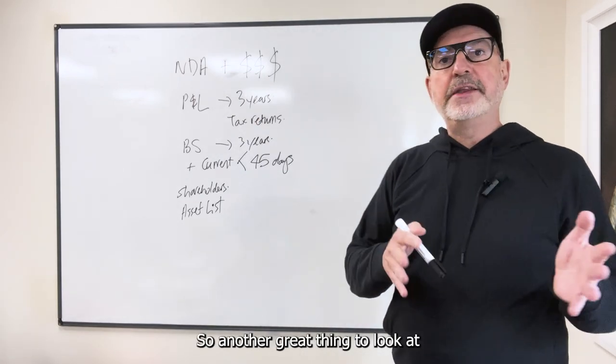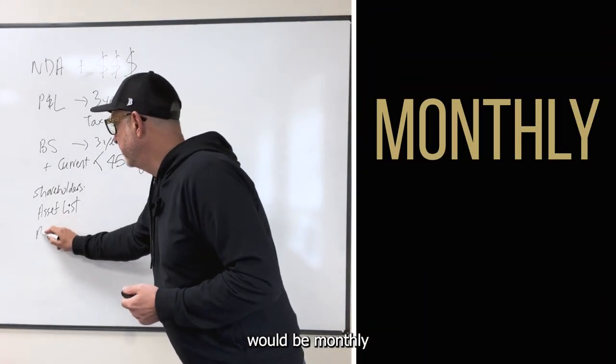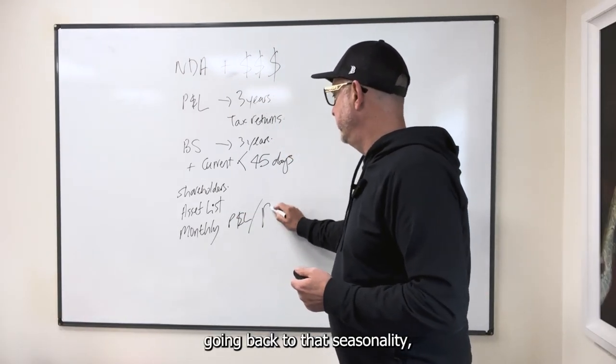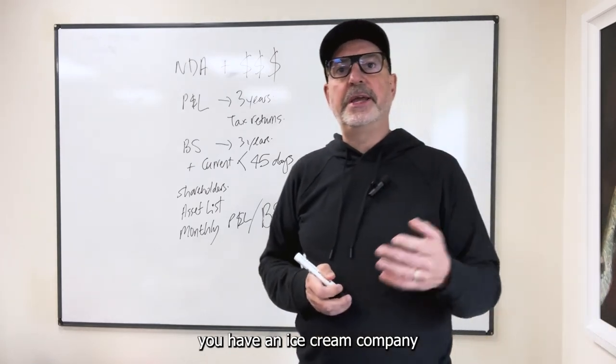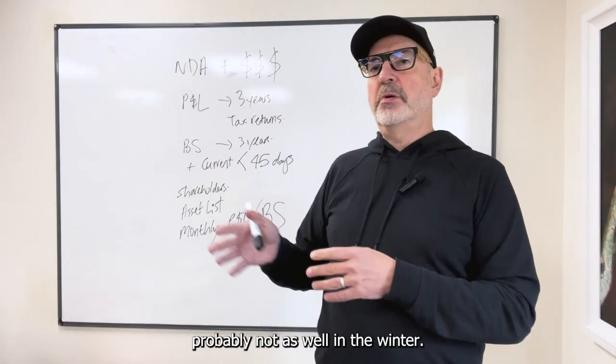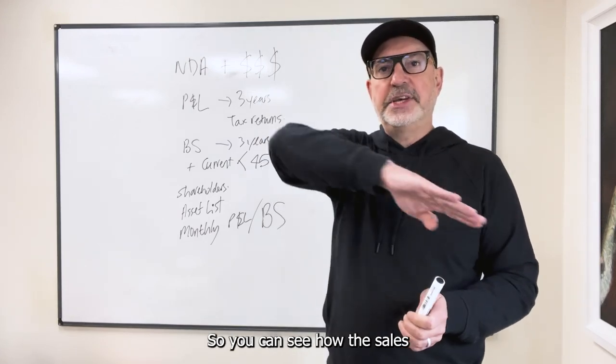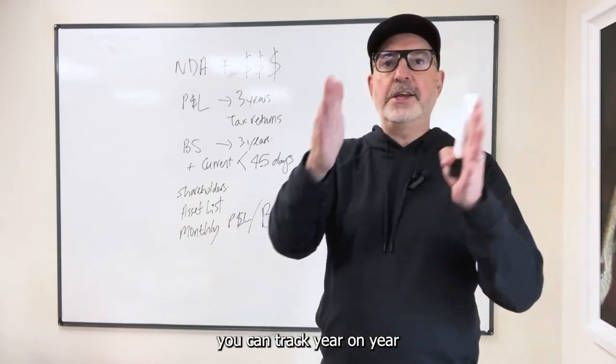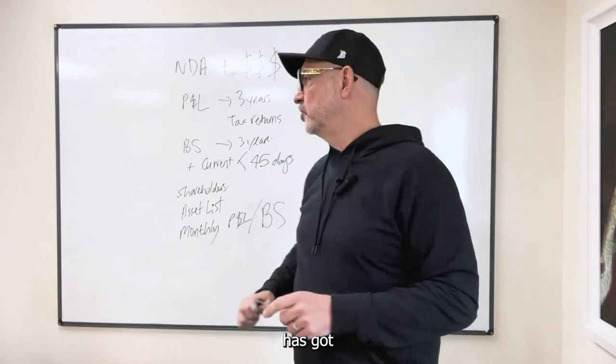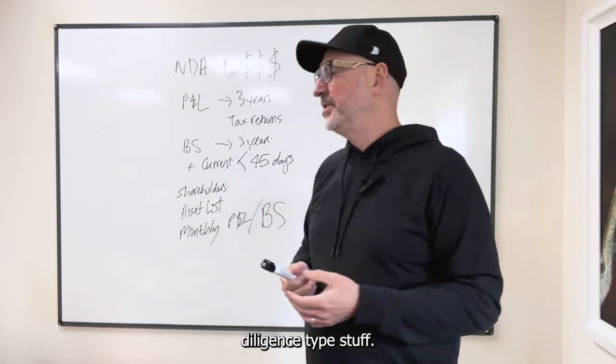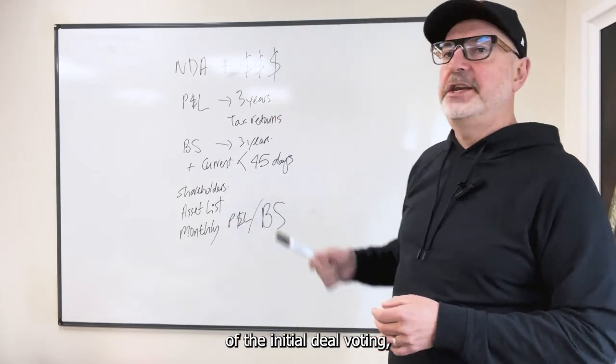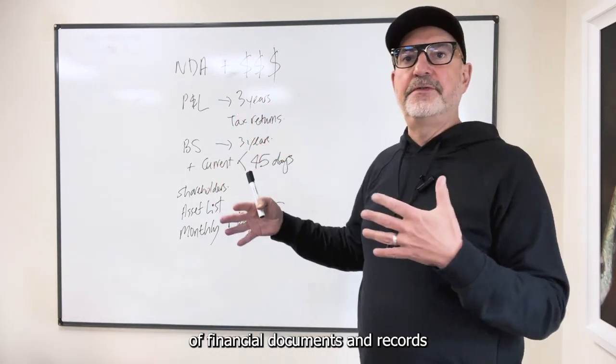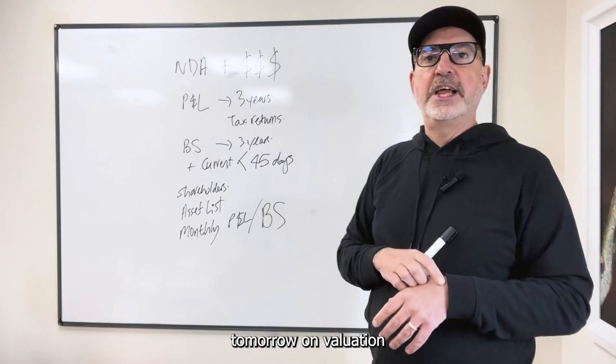What also could we see? So another great thing to look at would be monthly P&Ls and balance sheets. So again, going back to that seasonality, if you've got a business, you have an ice cream company, going to be doing really, really well in the summertime, probably not as well in the wintertime. So you can see how the sales ramp up and ramp down. If you get the monthlies over a three-year period, you can track year on year how the performance of the business has gone. That is more due diligence type stuff. But if you can get it as part of the initial deal vetting, all well and good. So we're going to be diving into all of these different types of financial documents and records tomorrow on valuation and structure.